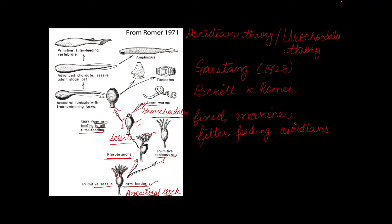The other line evolved into sessile ancestral urochordates. These ancestral urochordates gave rise to chordates along three lines. One line evolved into urochordates, also known as tunicates, and one line gave rise to cephalochordates. These early hemichordates were sessile — they were fixed — but they developed a free-swimming tailed larva.